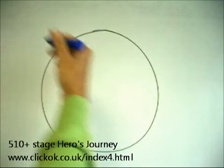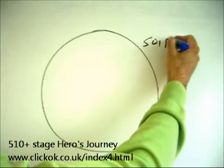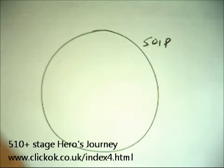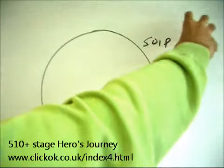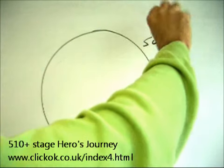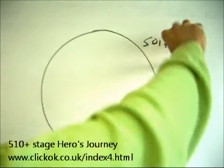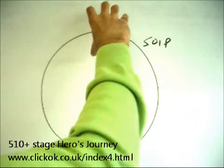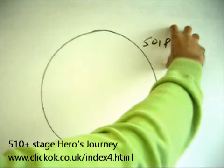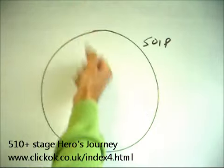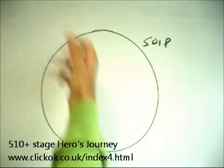In X-Men First Class, what we have is a state of imperfection — classic inciting incident symbolism. Eric loses his mother and then Shaw kills her. We've got a great antagonism that needs to be contained. We haven't got the capacity to do that at the moment, but we're going to go through the journey and gain those capacities, confront that antagonism at the end, and suppress it, contain it, extinguish it.